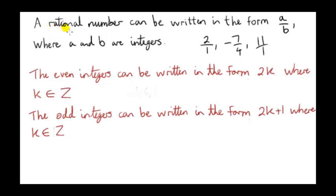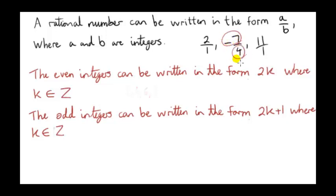As a reminder, a rational number is the ratio of two integers. So it can be written in the form A over B, where A and B are integers. Here are some examples of rational numbers. The number 2 is a rational number — it's a ratio of the integers 2 and 1. Minus 7 quarters is rational; it's a ratio of the integers minus 7 to 4.